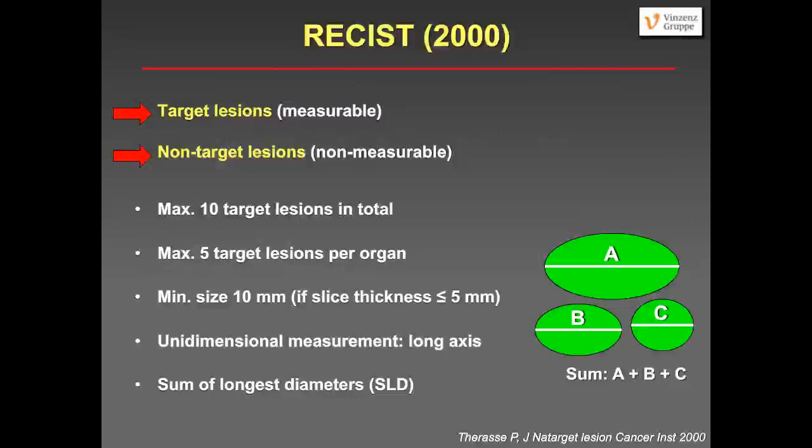When you measure these lesions, you should take a unidimensional measurement — not a perpendicular bi-dimensional one — which was simpler than the WHO measurement. Measure the long axis. If you look at the image with lesions A, B, and C, you measure the longest diameter of each and then add them up to get the Sum of Longest Diameters, SLD.